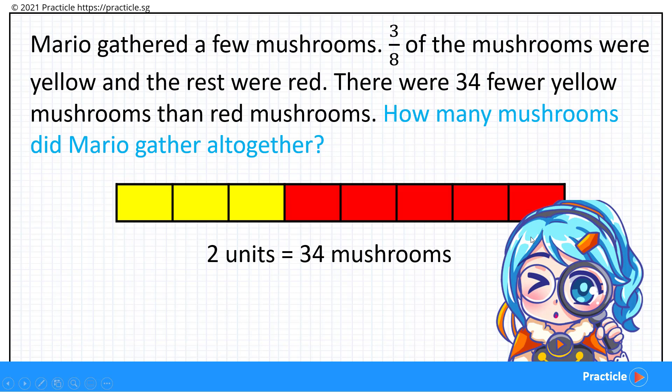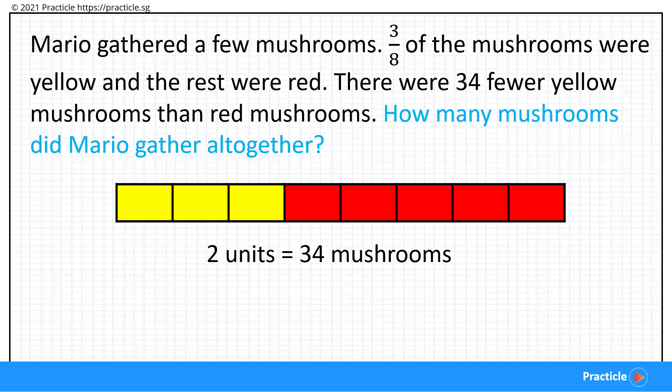The other way, which is much faster, is to multiply 34 mushrooms by 4. Why? That's because if we were to look at the two numbers 2 and 8, can you see that 8 is 4 times of 2? And that means that the value of 8 parts must also be 4 times of 2 parts, correct? Now when we work this out, 34 times 4 is going to give us 136 mushrooms. Do you get that? And that's the number of mushrooms that Mario gathered altogether. Problem solved!